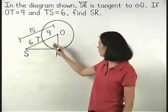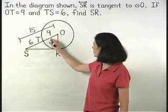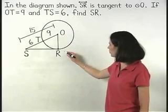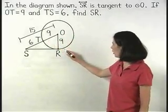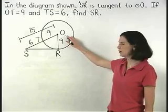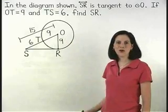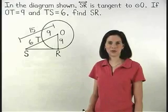Since we are given that OT equals 9, we know that OR must also equal 9 since OT and OR are both radii of circle O, and all radii of a circle are congruent.